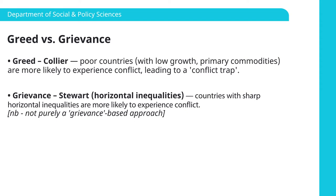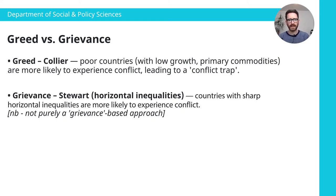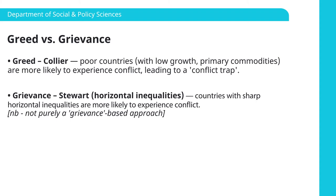Just to briefly explain what she means by horizontal inequalities: horizontal inequalities are inequalities between social groups. It doesn't just cover income and wealth, although that is one factor — it also covers inequalities in relation to political representation and, importantly, inequalities in relation to access to certain kinds of government-mediated resources, for example housing, education, and government jobs. She argues that it's in situations where you have inequalities in these kinds of resources that run along social lines that conflict is more likely.